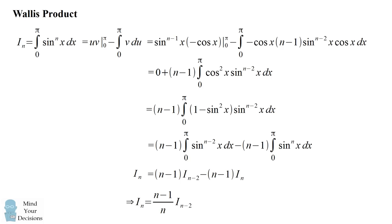We've come up with a type of reduction formula — we can solve for the integral i sub n in terms of a lower powered integral i sub n minus 2. And we have the ratio of i sub n over i sub n minus 2 equal to n minus 1 over n. This ratio is going to be important.